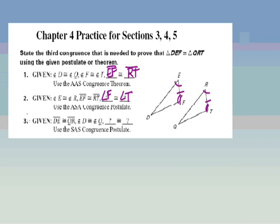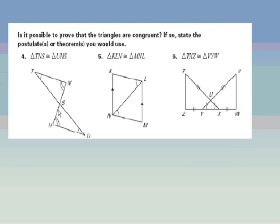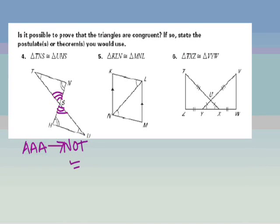I'd like you to do number 3 and give the answer in the notes check. Moving on — is it possible to prove these triangles congruent? We've got triangle TNS and triangle UHS. I'm given two angles, and the only other information is that the vertical angles are congruent, giving me angle-angle-angle. But since AAA is not a way of proving triangles congruent, no — we cannot prove these triangles congruent. AAA is bad.